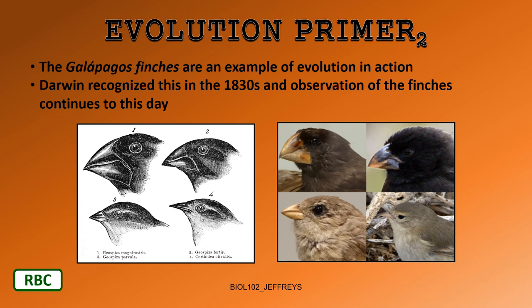The Galapagos finches — sometimes called Darwin's finches — are a collection of multiple species of birds that live in the Galapagos Islands and are an example of evolution in action. Darwin recognized this in the 1830s when he was the naturalist on the Beagle. He observed tortoises, iguanas, plants, and these small birds called finches.